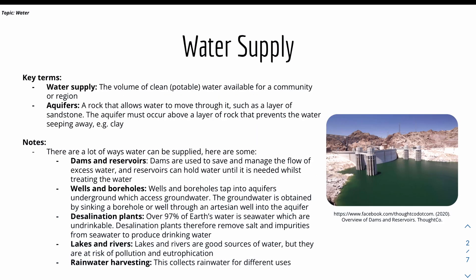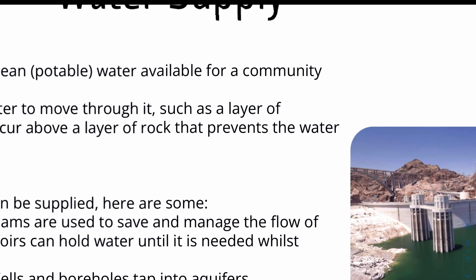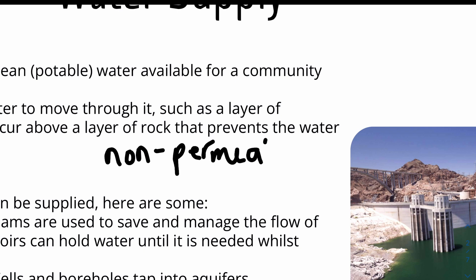We'll first look at water supply. The key term or definition for water supply is the volume of clean or potable water available for a community or region. Aquifers are rocks that allow water to move through them, such as a layer of sandstone. The aquifers must occur above a layer of rock that prevents the water from seeping away — non-permeable rocks — which basically means not allowing water to pass through.